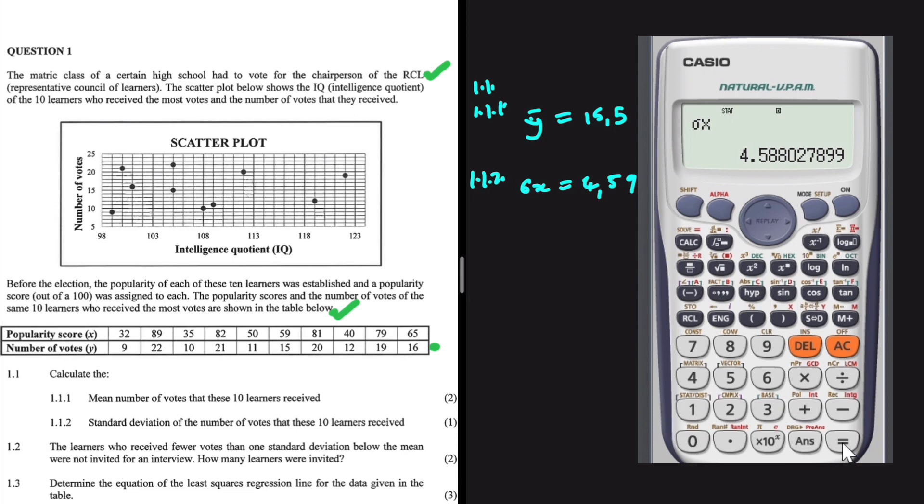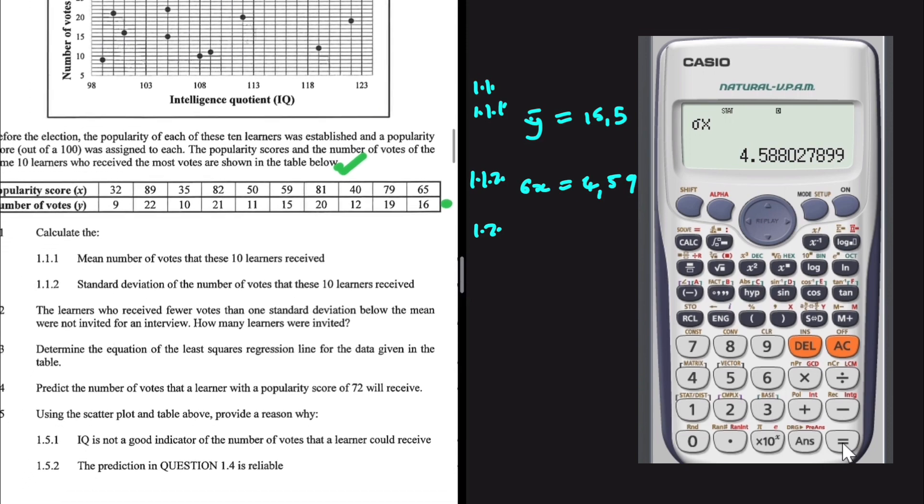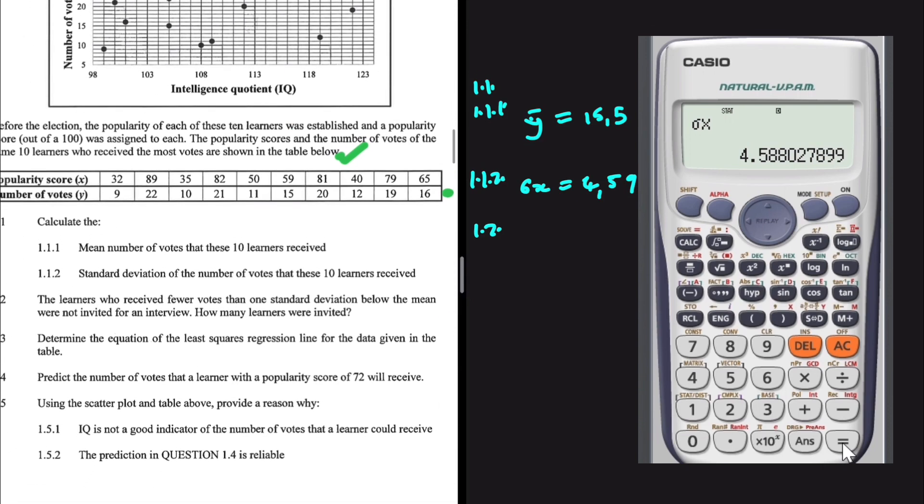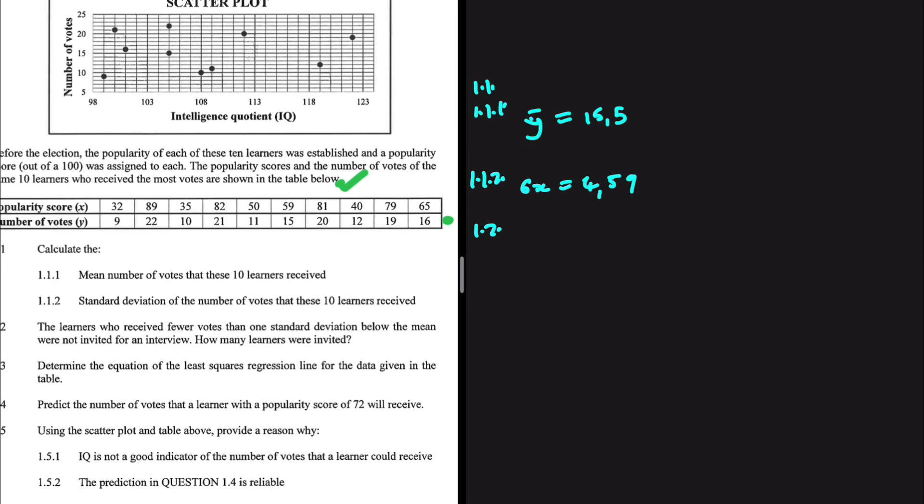Let's go ahead and do 1.2. So in 1.2, the question is saying that the learners who received fewer votes than one standard deviation below the mean were not invited for an interview. How many learners were invited? So now we have to determine the value of one standard deviation below the mean. So we're going to have y bar minus the standard deviation. This is equal to what is the mean, 15.5, the standard deviation, 4.59, and this shall be equal to 10.91.